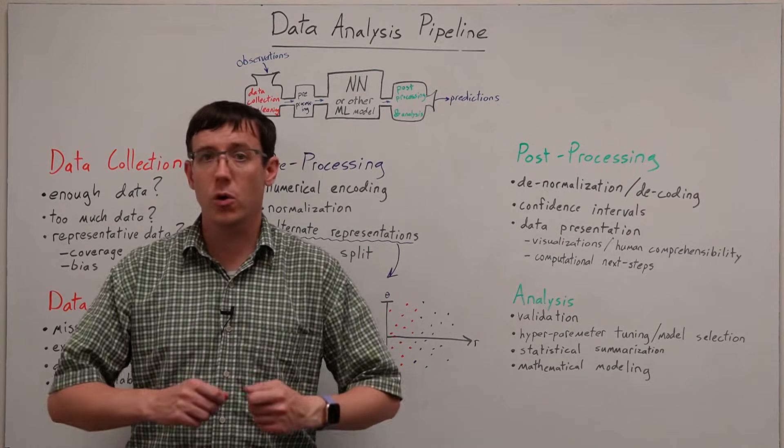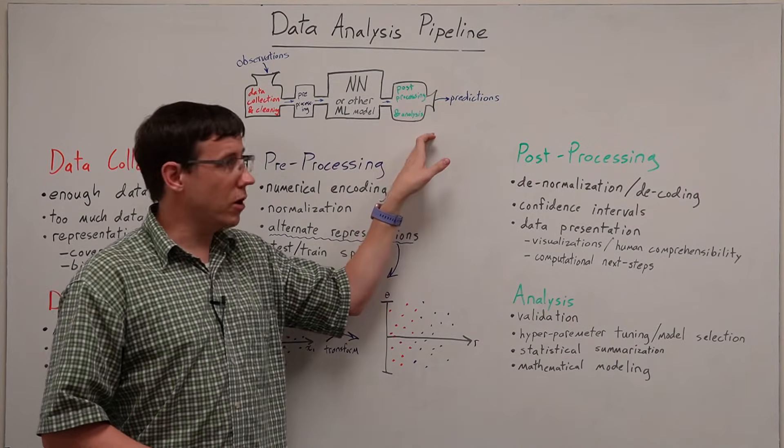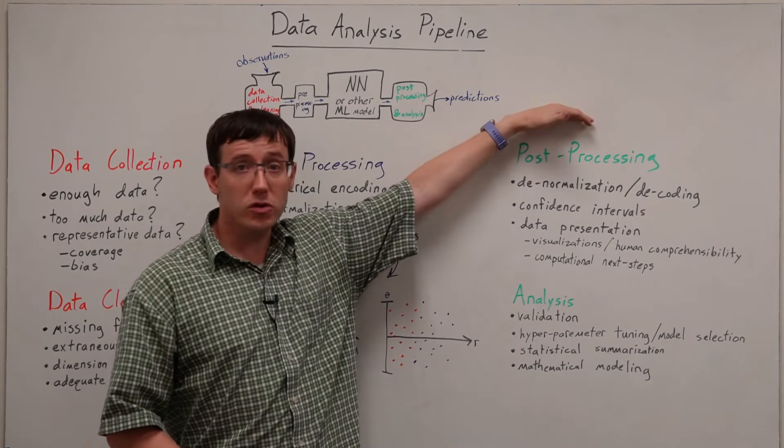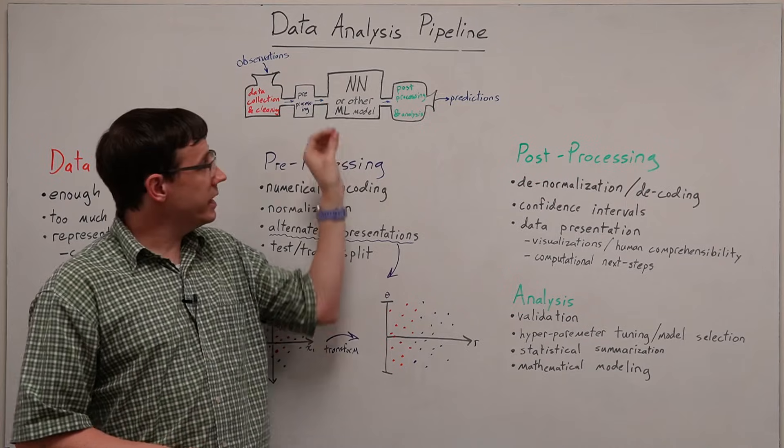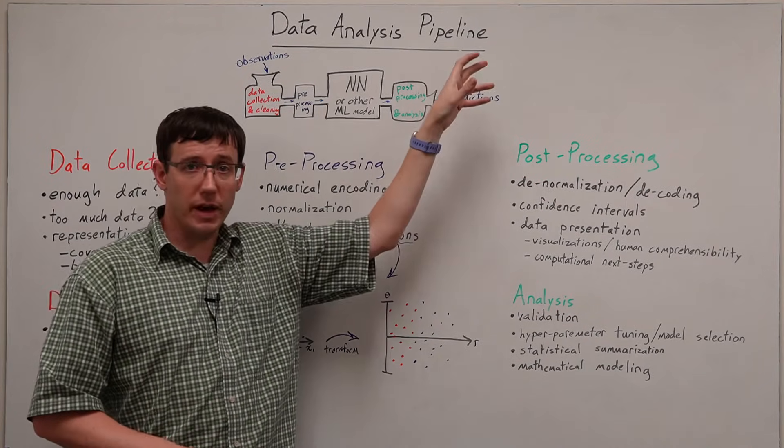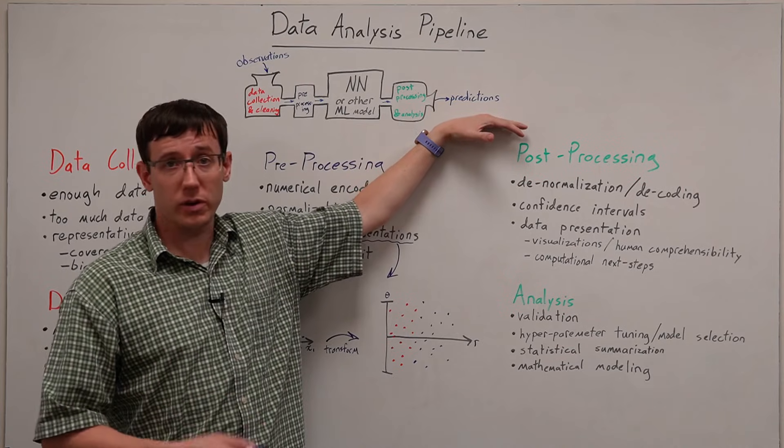But after data has gone through the neural network, there may also be post-processing steps that we want to apply. First, we will generally need to take the output of the neural network and turn that back into the type of prediction we're actually interested in.